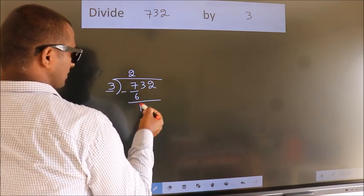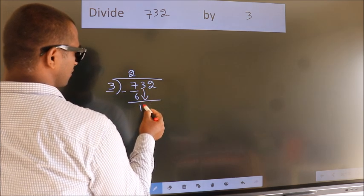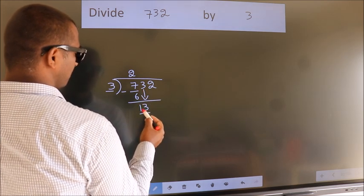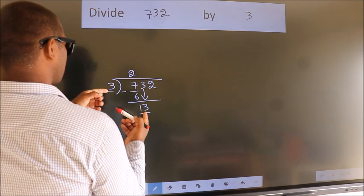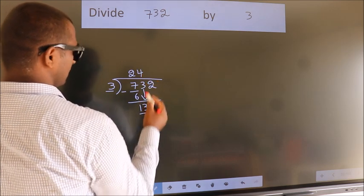After this, bring down the beside number. So 3 down. So 13. A number close to 13 in 3 table is 3 4's 12.